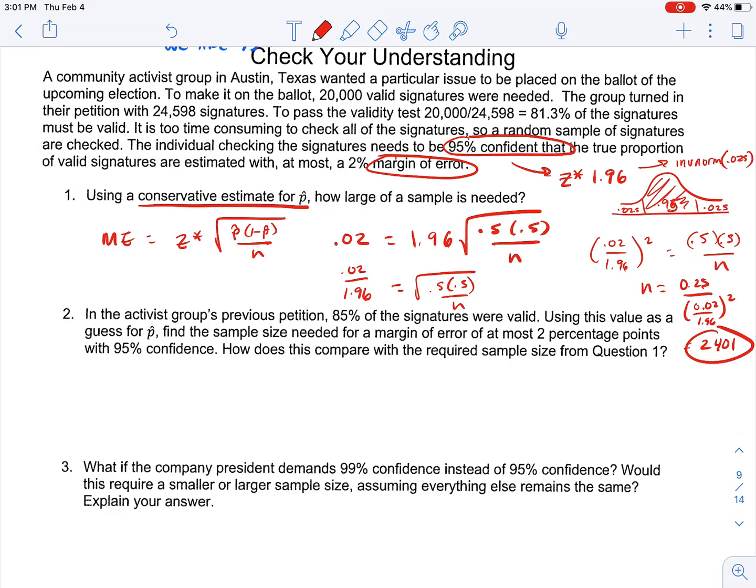So we just had to work backwards algebraically to figure out what our sample size would be based on a certain confidence level of 95% which gives us our z star there, and then our conservative estimate because we don't know the proportion is .5.